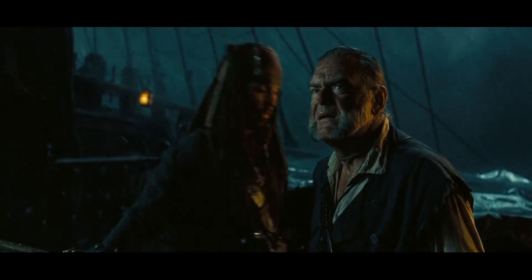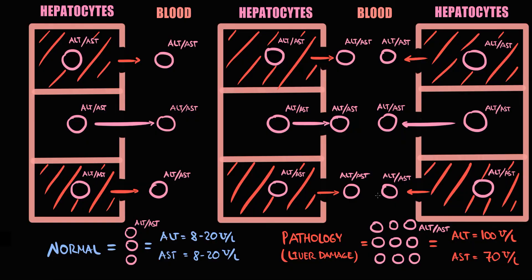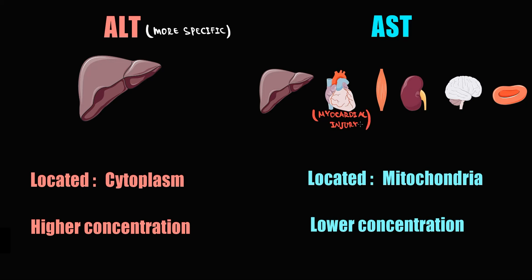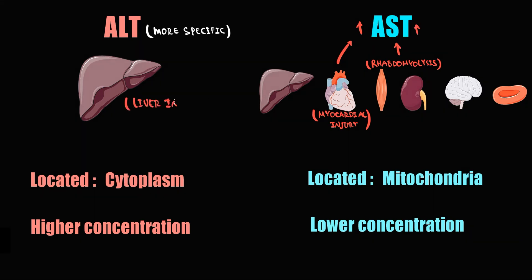Both ALT and AST share some features but are also different. ALT is mostly located in liver tissue, whereas AST is found in the liver, heart, skeletal muscles, kidneys, brain tissue, and red blood cells. Therefore, ALT is a more specific enzyme for liver tissue. AST can increase in other conditions such as myocardial infarction or rhabdomyolysis, but an elevated ALT most likely points to liver pathology.